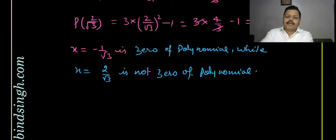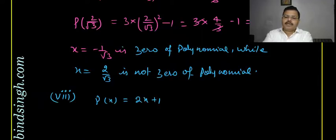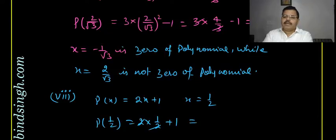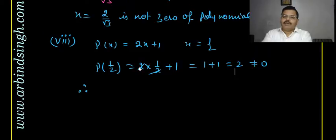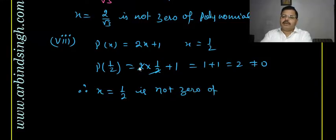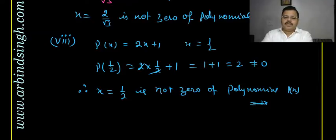Eighth: p(x) = 2x + 1, x = 1/2. Put x = 1/2: p(1/2) = 2(1/2) + 1 = 1 + 1 = 2, which is not equal to 0. Therefore x = 1/2 is not a zero of p(x) = 2x + 1.